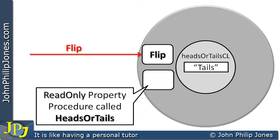Now what does this read-only property procedure actually do? Because it's in the outer grey area, it can see what's stored in the middle — it can see the "tails" stored in the headsOrTailsCL private variable — so it is able to go and get a copy of it and send it to any other object that sends a message.